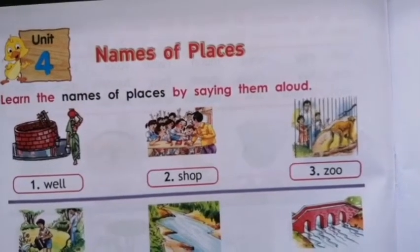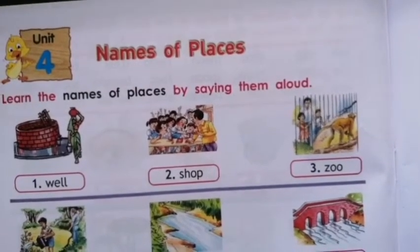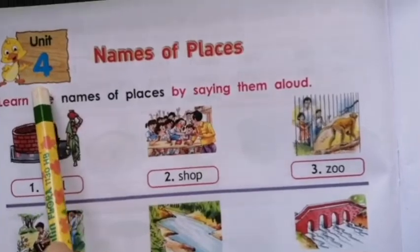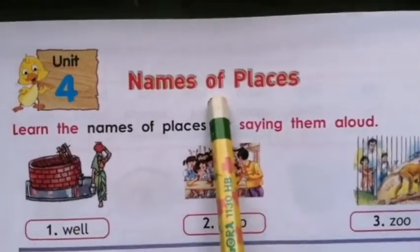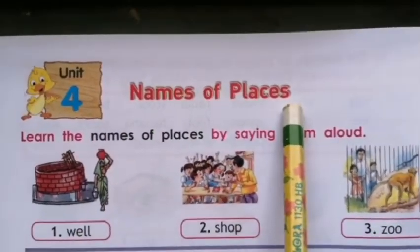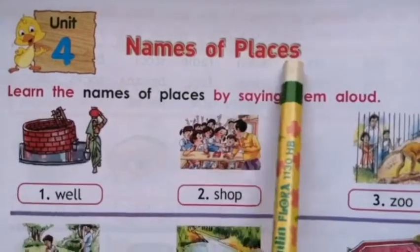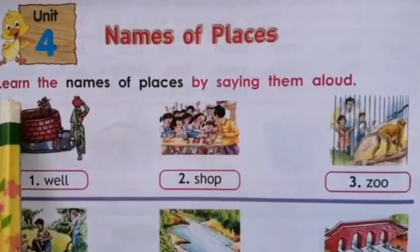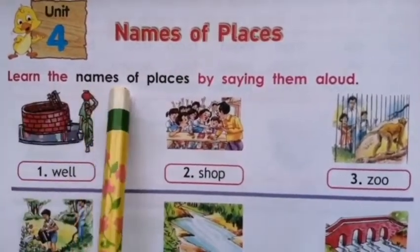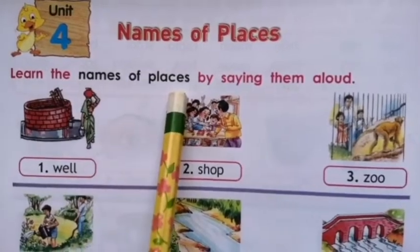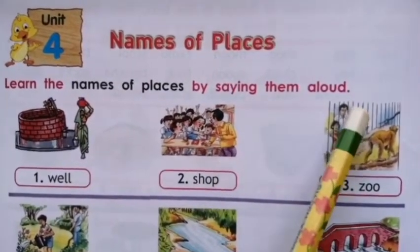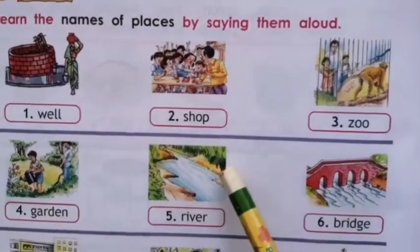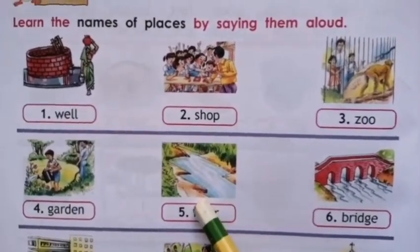Hello students. Now I am going to start unit number 4: names of places. Aaj ham places ke names sikhenge, ok? Learn the names of places by saying them aloud. So I am going to read and you have to repeat after me.